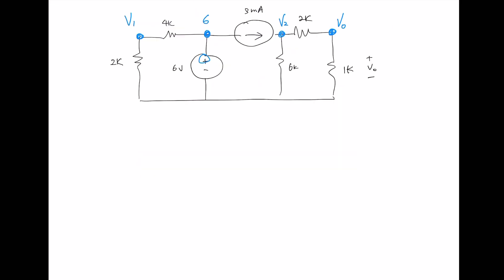We need to assign the direction of the current this time. So we have a 3 milliamps going in that direction. So we have that, right, down, down, left, down. So I assign the direction of the current. To find the V0, let's do use nodal analysis.